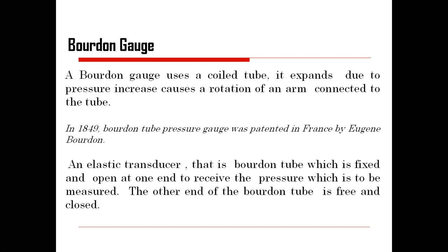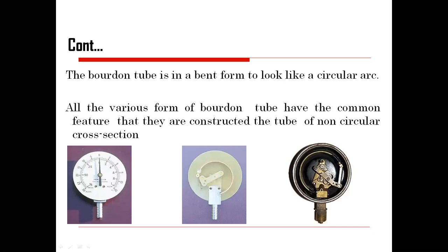The Bourdon tube is an elastic type of transducer that is fixed and open at one end to receive the pressure, and it measures the pressure at the other end — the free end. That free end may be open or closed depending upon what type of Bourdon tube is being used. This is the general structure of the Bourdon tube — this is the front side and this is the back side. Here we apply the pressure and whatever pressure is applied is deflected on the scale.